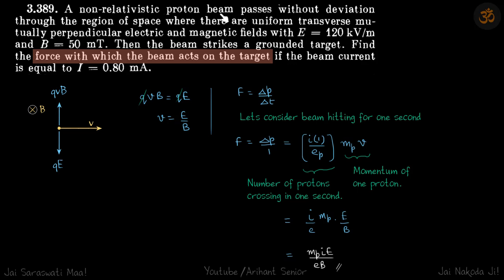We are given a proton beam that passes without deviation, and we are asked for the force with which the beam acts on a target. If it's passing without deviation, that means forces must be balanced. So QvB, the magnetic field force, should equal the electrostatic force QE. This gives the velocity as E by B.